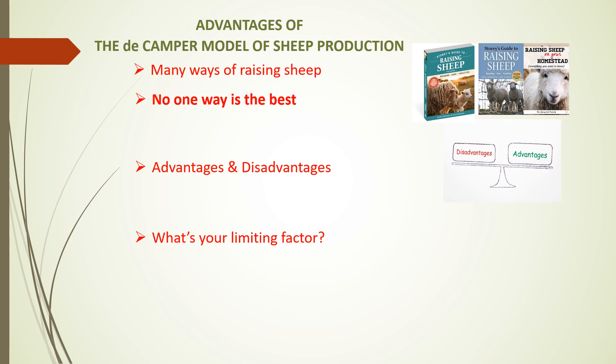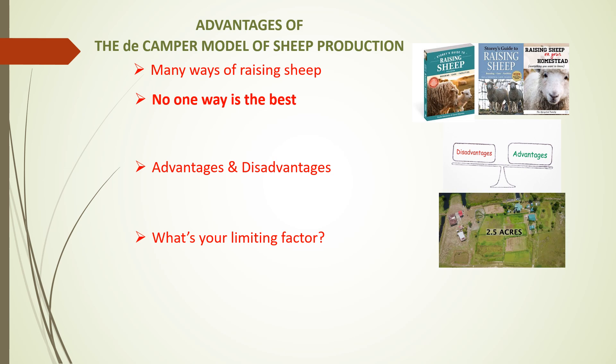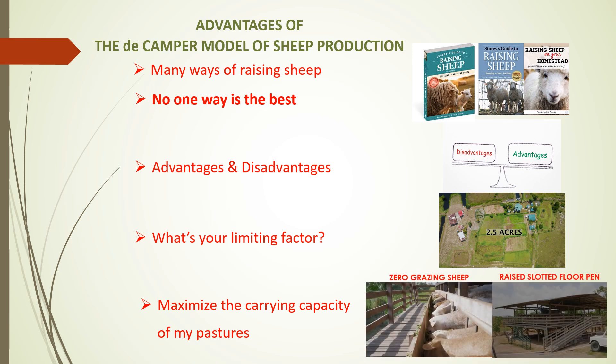For example, in my case, the limiting factor was the availability of land for pasture — just 2.5 acres. In order to maximize the carrying capacity of these pastures, I chose to use a zero grazing system, with the sheep being housed in a raised slotted floor pen. Today, I will discuss the advantages and disadvantages of the DeCampo model of sheep production.